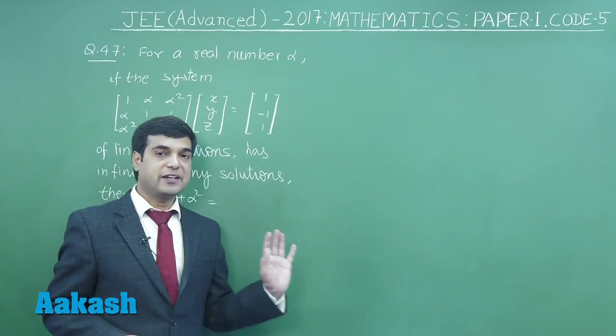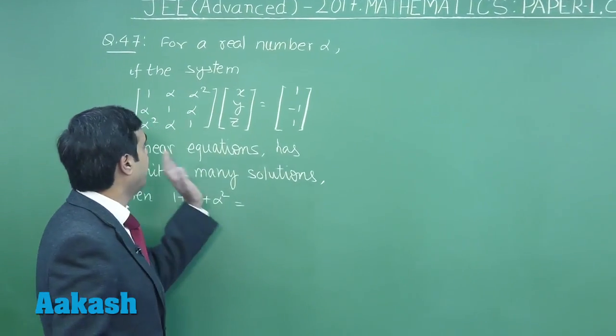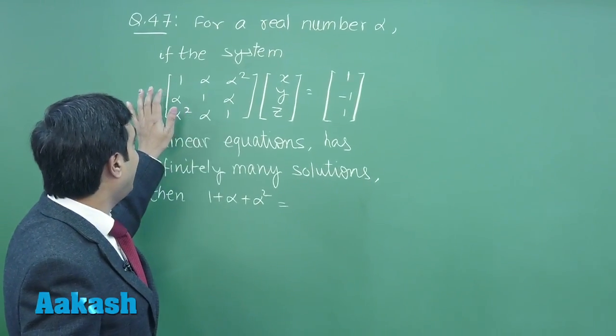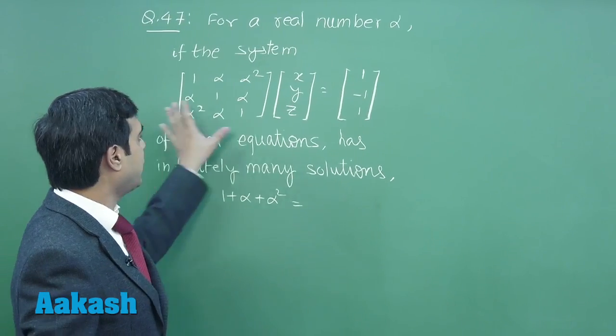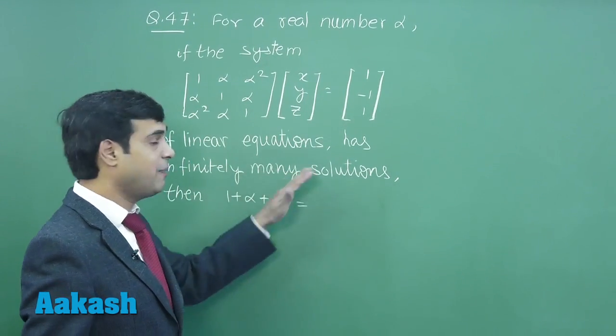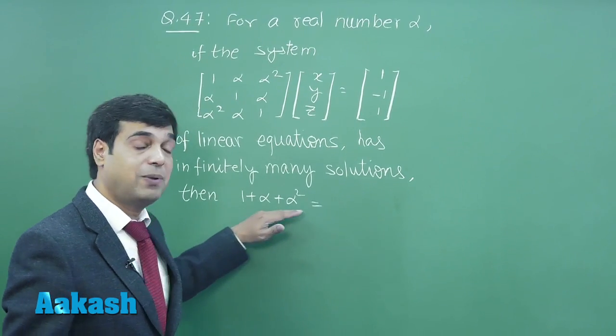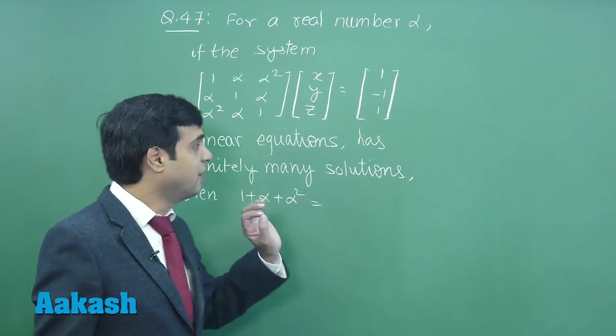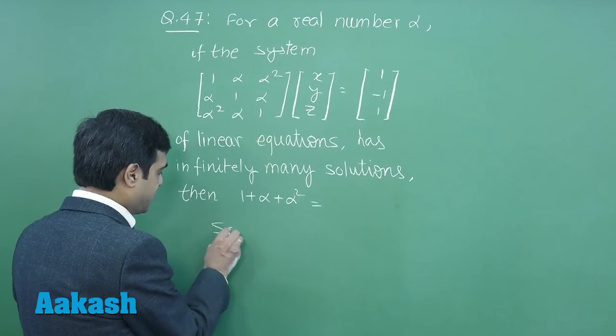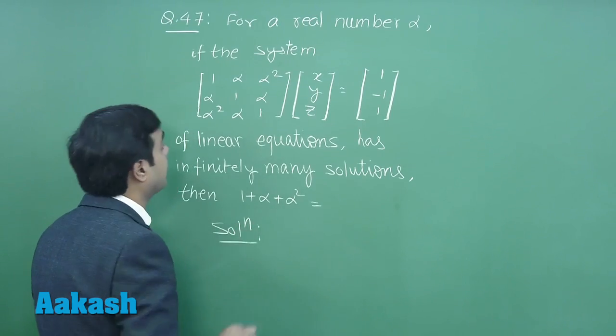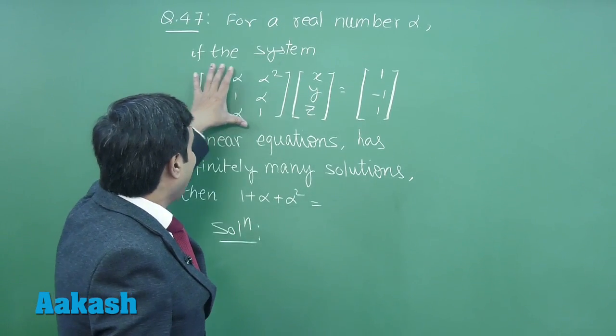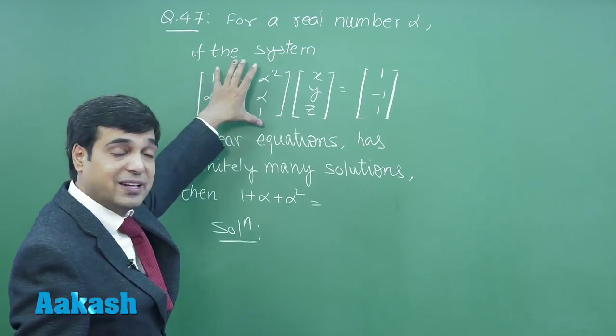Let us consider the next one, question number 47. For a real number alpha, if the system of equations as given has infinitely many solutions, then we have to find the value for 1 + alpha + alpha². A simple one, let us start this question.